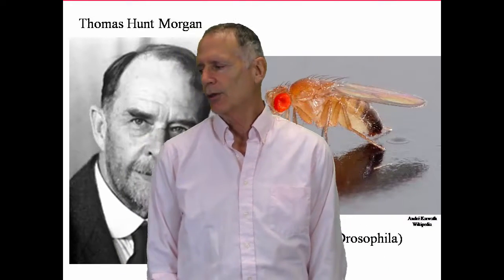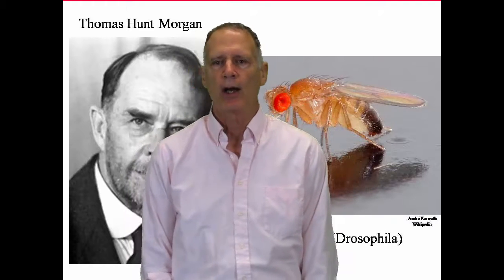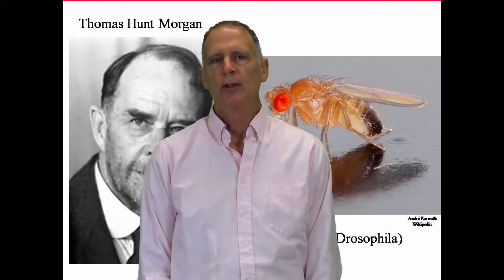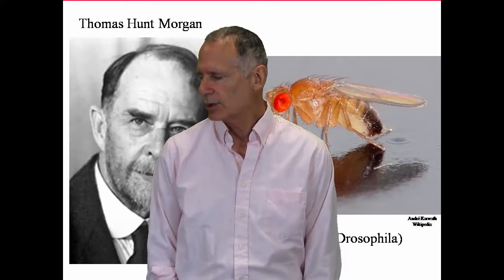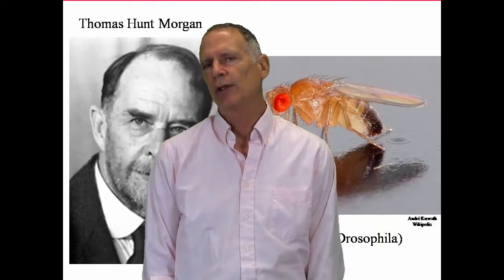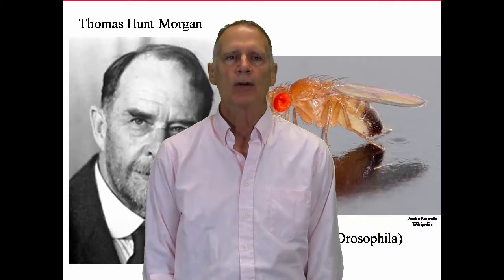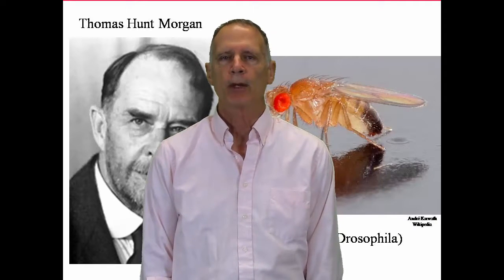Not only do they say where the chromosomes are, but they verify what Mendel had already discovered. And they do it with fruit flies, Drosophila. Drosophila was chosen because of its quick reproduction.